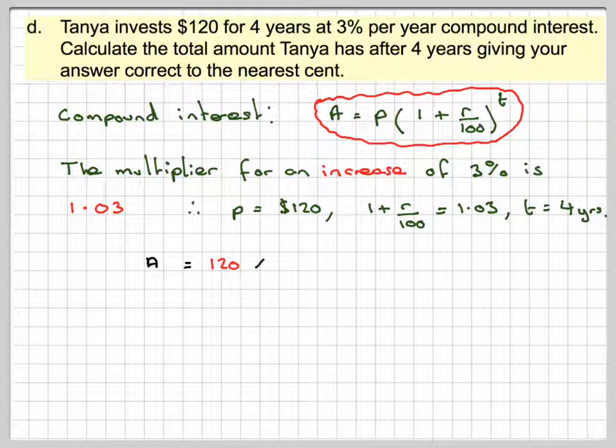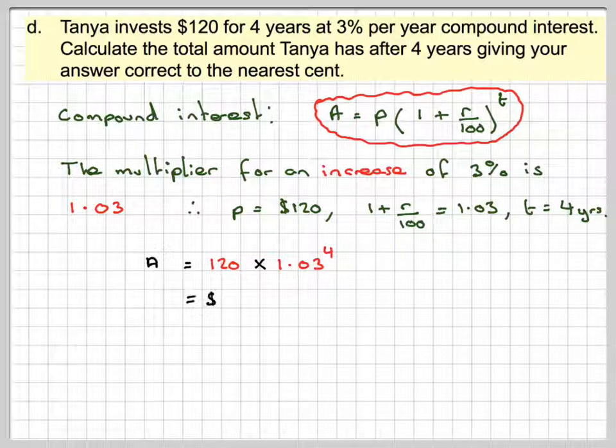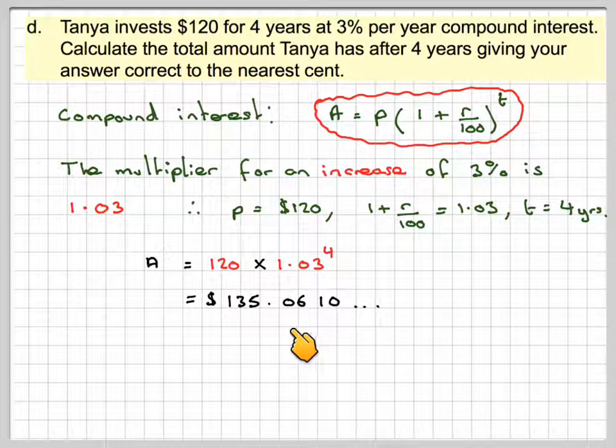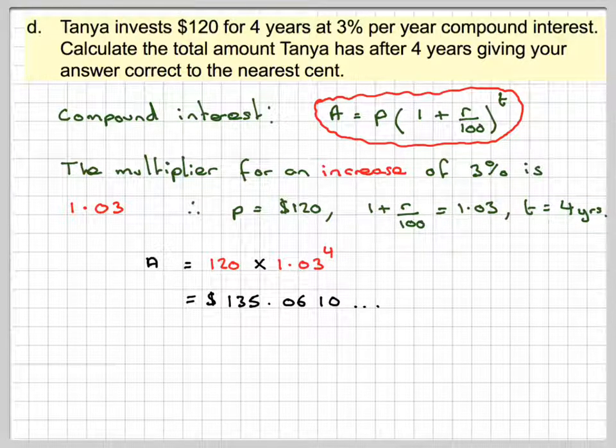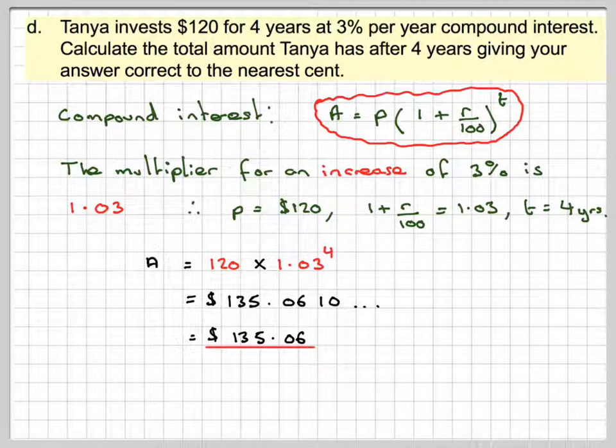So A will be 120 times the multiplier, 1.03 to the power of 4. Go to our calculator, that's going to give me 135.06110, which is 135.06 to the nearest cent.